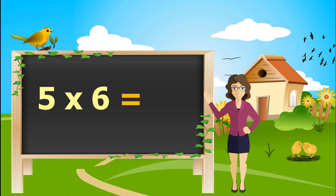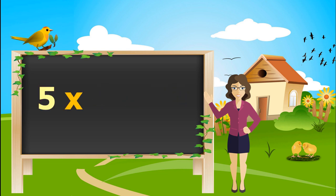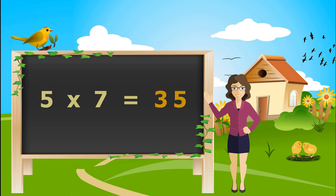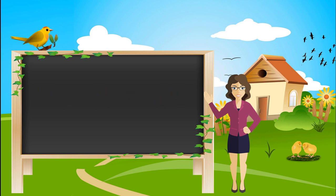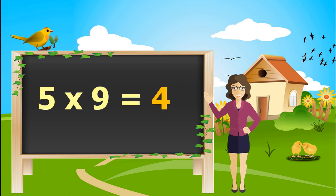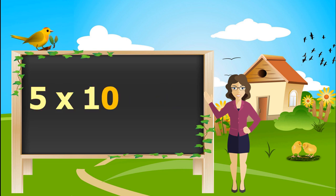5 times 6's are 30. 5 times 7's are 35. 5 times 8's are 40. 5 times 9's are 45. 5 times 10's are 50.